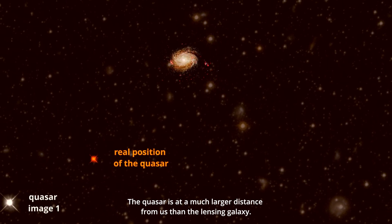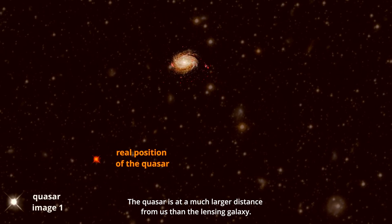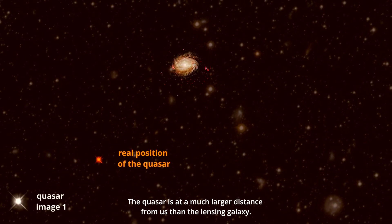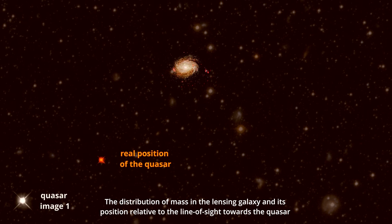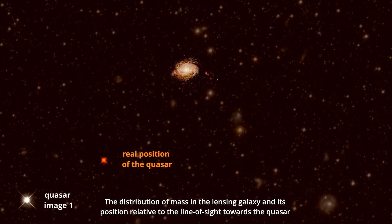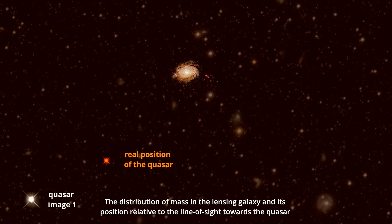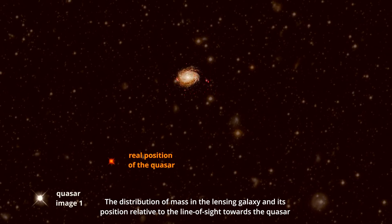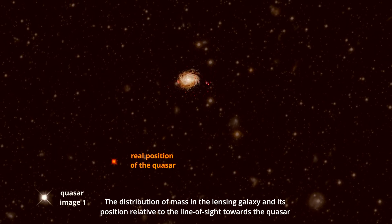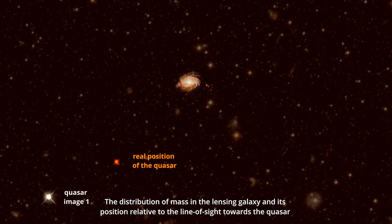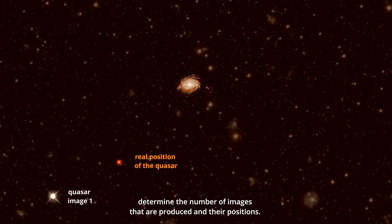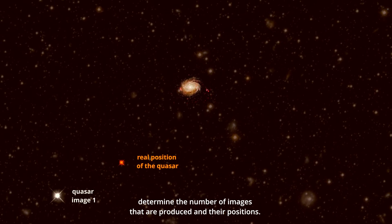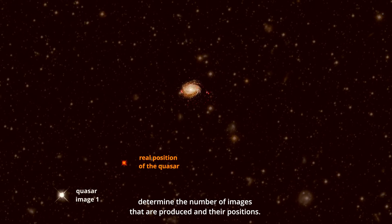The quasar is at a much larger distance from us than the lensing galaxy. The distribution of mass in the lensing galaxy and its position relative to the line of sight towards the quasar determine the number of images that are produced and their positions.